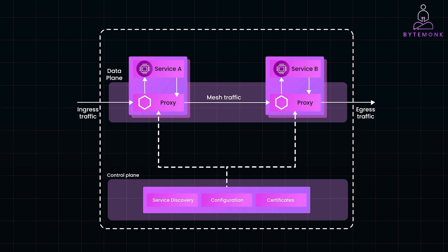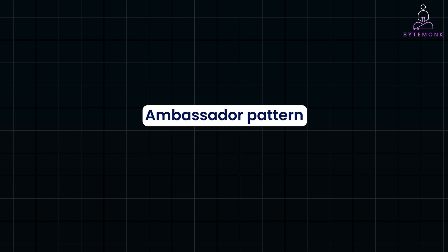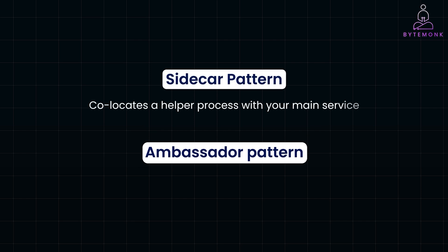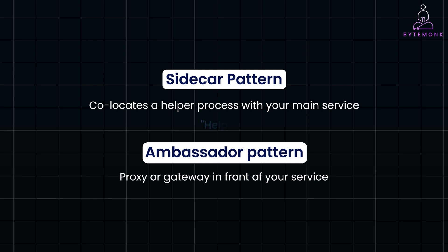You might also have heard about the ambassador pattern, which is often compared to the sidecar pattern. While they are related, there is a key difference. The sidecar pattern co-locates a helper process with your main service to manage cross-cutting concerns, whereas the ambassador pattern places a proxy or gateway in front of your service to handle communications with external systems. In simpler terms, sidecars are helpers working within your environment, while ambassadors are gatekeepers that interface with the outside world.